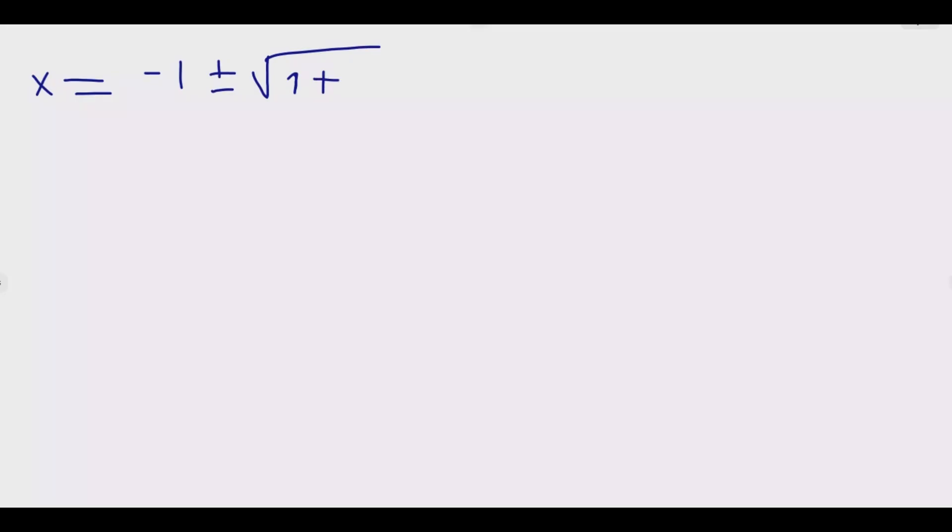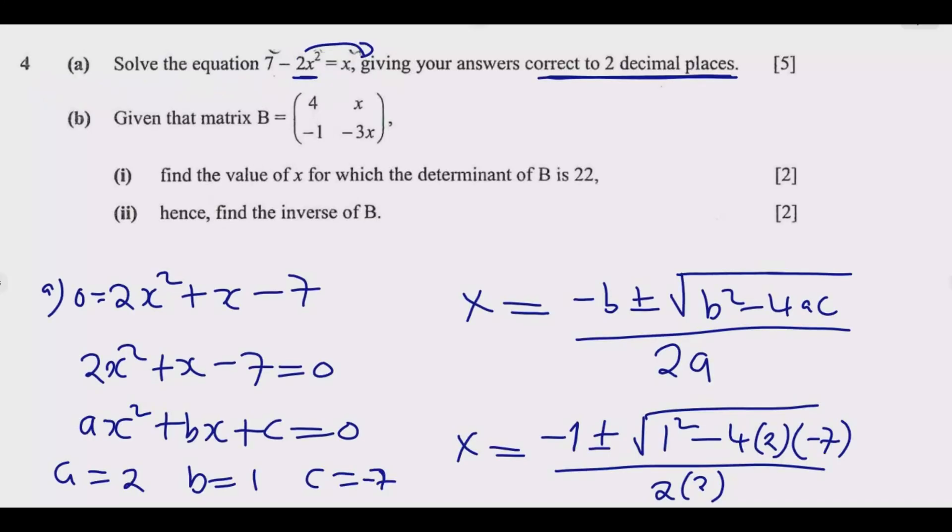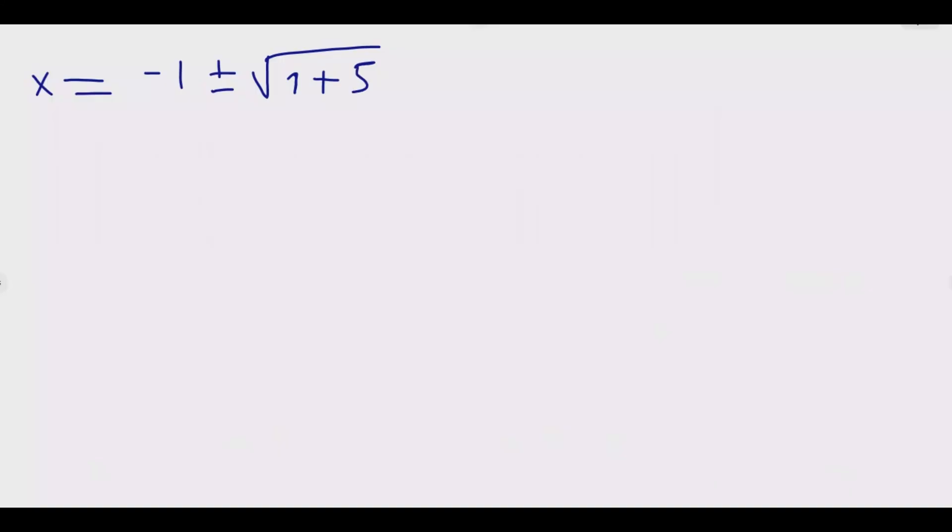What is a? a is 2. What is c? c is negative 7, then over 2 times 2. From here we just simplify. x equals negative 1 then plus or minus, then 1 squared is 1, then plus, if you look at it, negative 4 times 2 times negative 7, that answer will be positive because of 2 negatives. 2 times 7 is 14, 14 times 4 is 56.